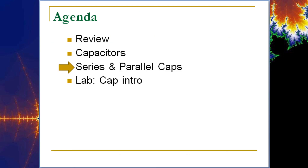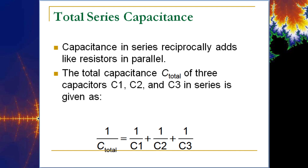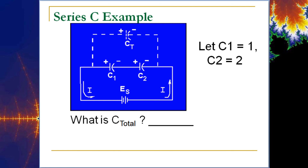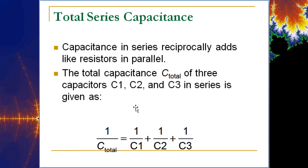Capacitors are the oddballs compared to inductors and resistors when it comes to series and parallel combinations. Capacitors in series add reciprocally — the same calculation you use for resistors in parallel. So the total capacitance C_total⁻¹ = (1/C₁ + 1/C₂)⁻¹. You do not simply add C₁ and C₂ when they are in series.